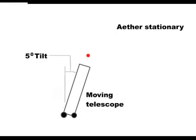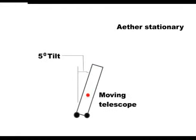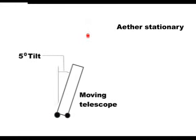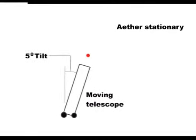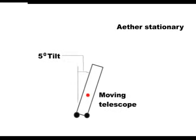In 1729, Bradley found that he had to tip his telescope forward very slightly to get a star in the centre of his telescope. It was assumed that this was due to the motion of the Earth around the Sun.